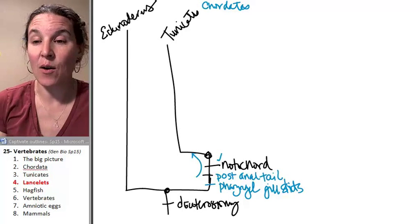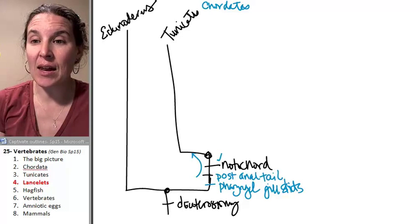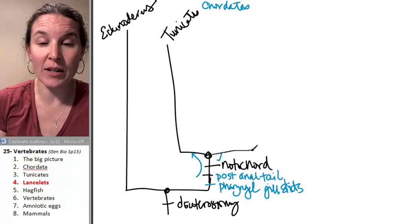Tunicates, yeah. Well, the next group, they're called lancelets, and I'm going to show you where they come off on the cladogram.